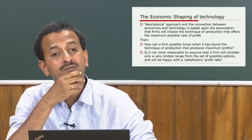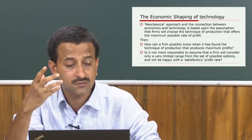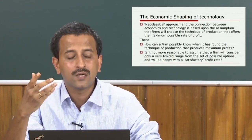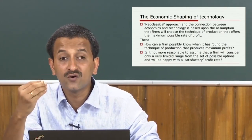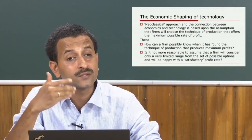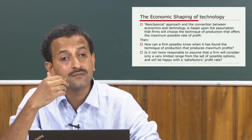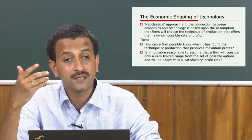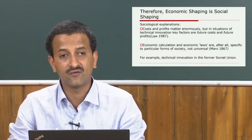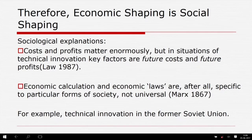This is found in the works of Schumpeter, who was perhaps one of the first to offer a theory of innovation in economics — which transcends economics. We sociologists also study Schumpeter in the context of social innovation. When innovation transcends the field of economics, it goes to the level of culture, society, quality, and so on. Therefore, we say economic shaping is social shaping.